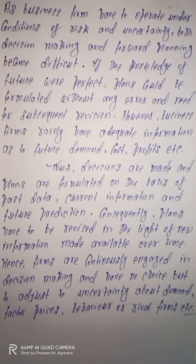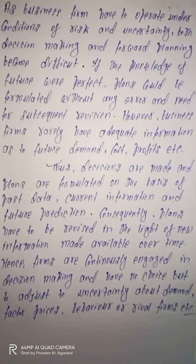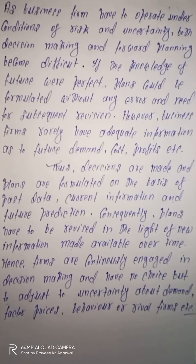अगर future के बारे में perfect information होती तो उसके according plans को properly formulate किया जा सकता था बिना किसी error के और बिना किसी subsequent revision की जरूरत के। लेकिन जब business firms की बात करते हैं तो future की demand, future के cost, और future के profit के बारे में adequate information की availability नहीं होती है। इसी वजह से जो decisions हैं उन्हें past data, current information, और future projection के basis पर formulate और plan किया जाता है। करूला के हमें past data को भी study करना पड़ता है, current information को भी collect करना होता है।